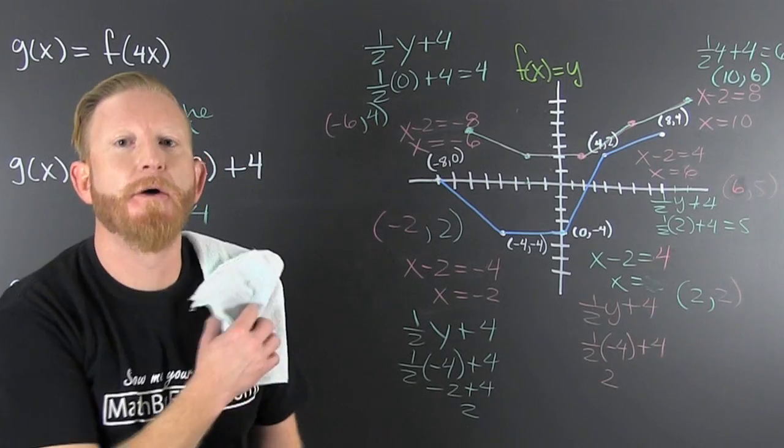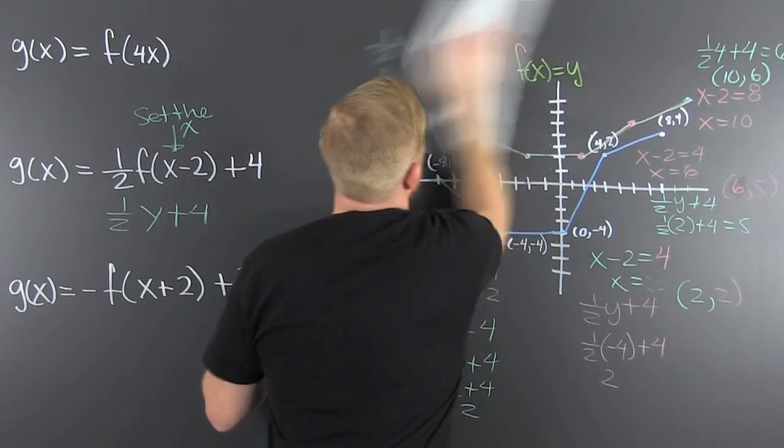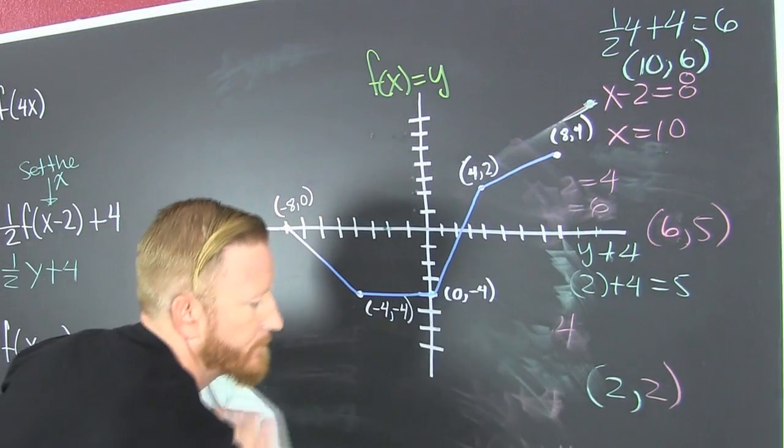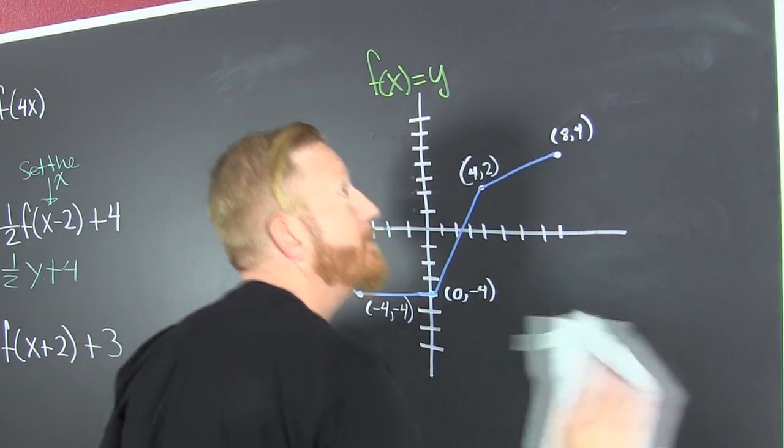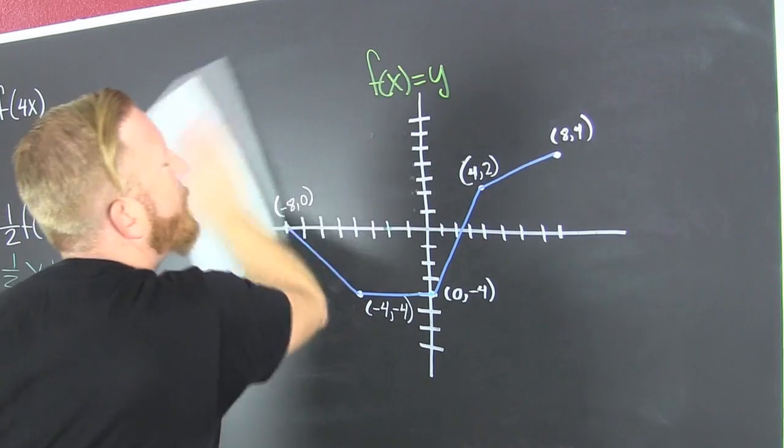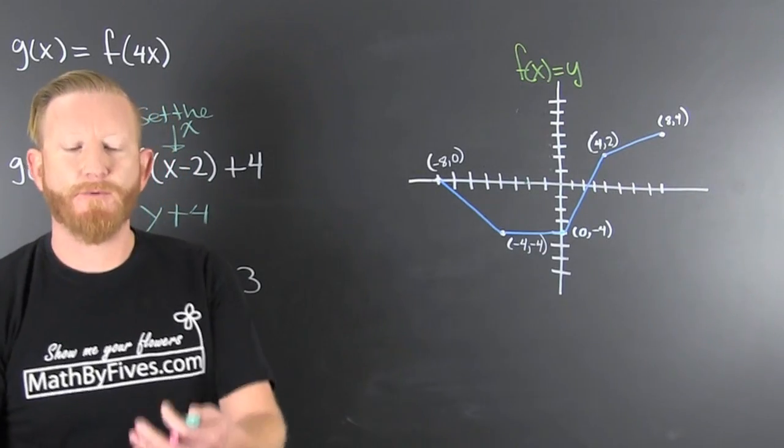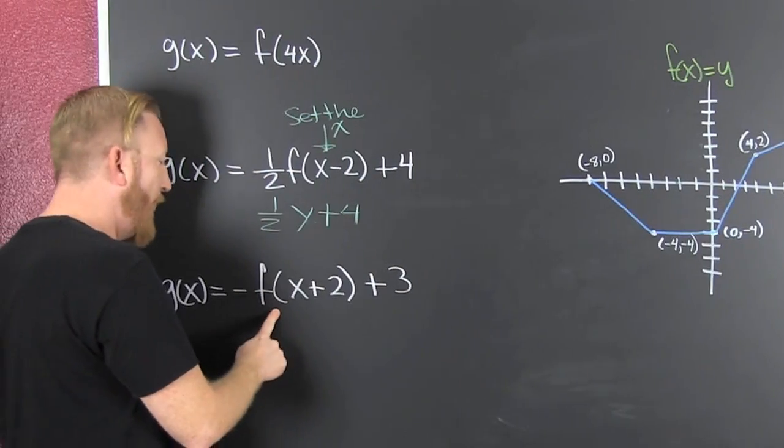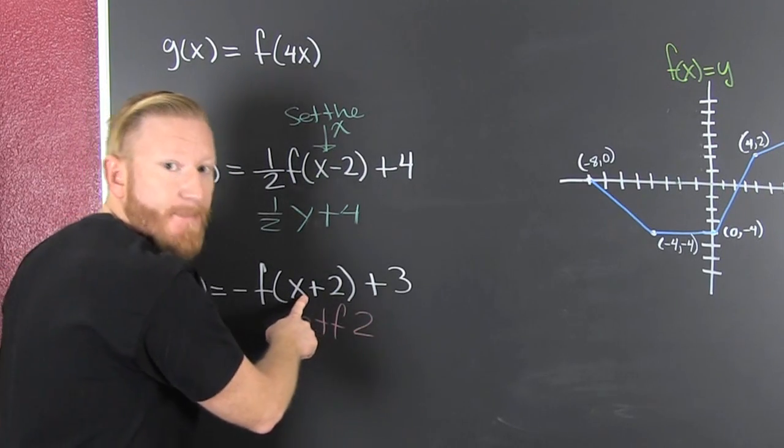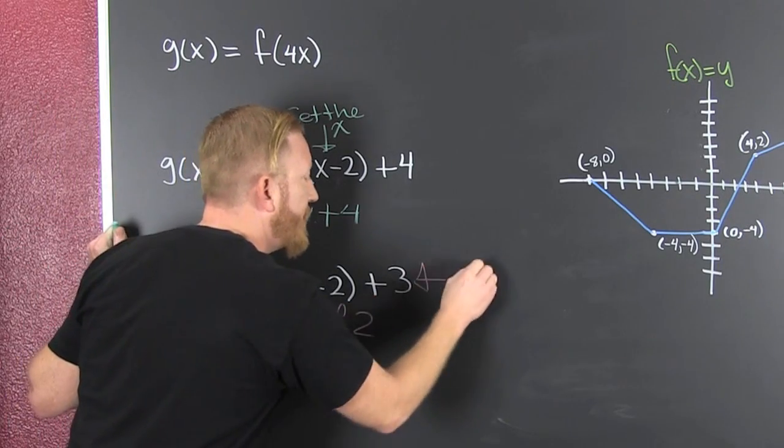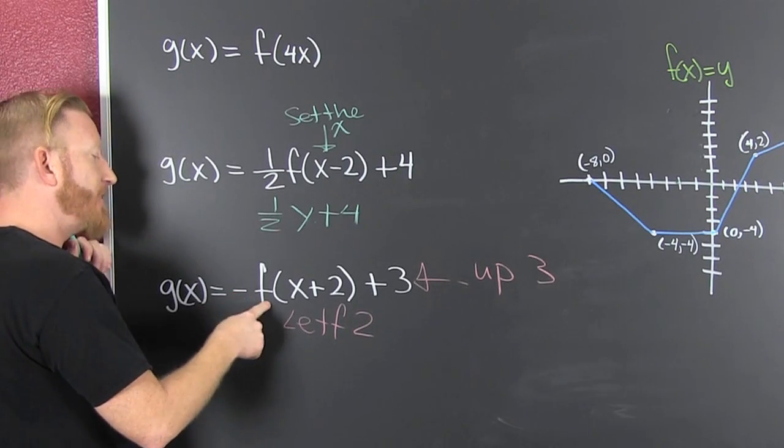One more. This time we're not going to find all those points. That's left 2 because it goes opposite the way you think. That's up 3. And then that's flip it. That takes all your y's and flips it.